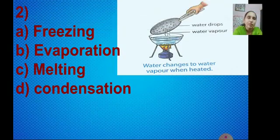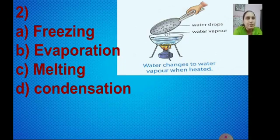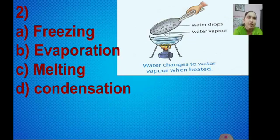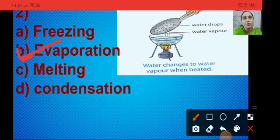In the next picture, water changes to water vapor when heated. The options are freezing, evaporation, melting and condensation. Here you can see the process of evaporation. When water changes to water vapor, that process is called evaporation. So I am putting a tick on evaporation, that is option B.